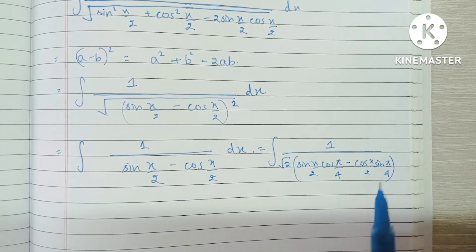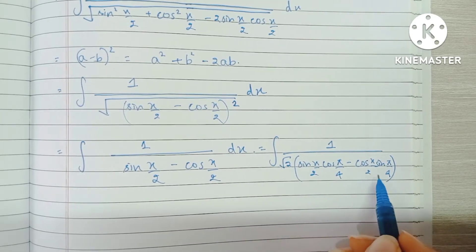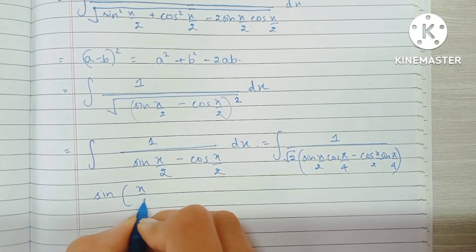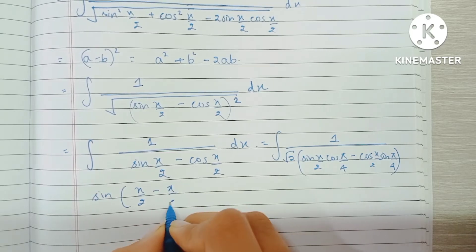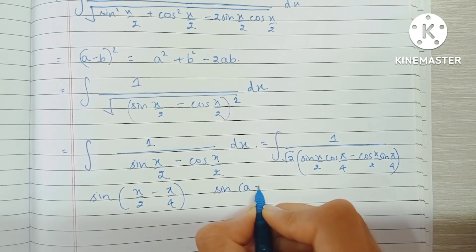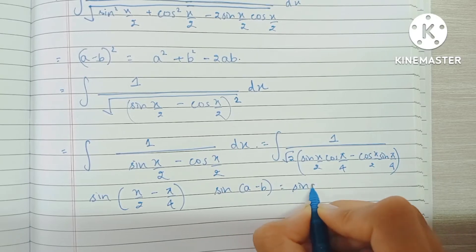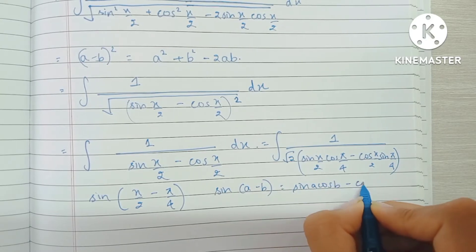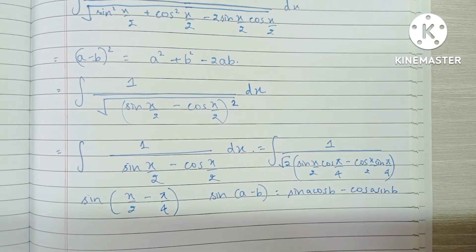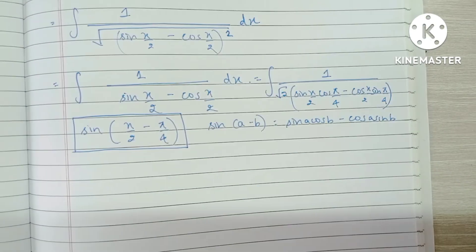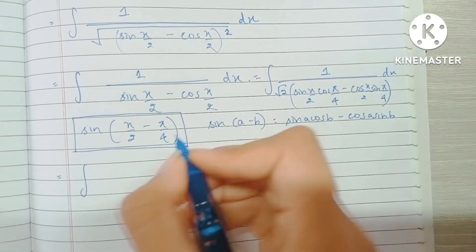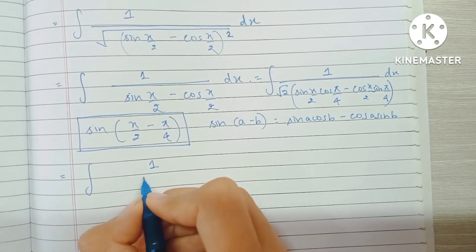These two expressions are exactly the same, and this is the expansion of sine(x/2 minus π/4), because sine(a minus b) equals sine a cos b minus cos a sine b, which is exactly what we have here. So now in our integrand, we substitute this new denominator.